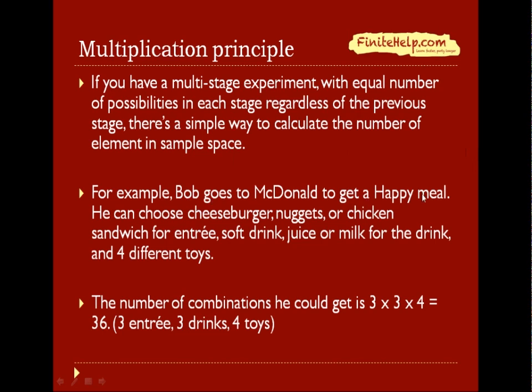For example, let's say Bob goes to McDonald's to get a happy meal. He can choose cheeseburger, nugget, or chicken sandwich for the entree, soft drink, juice, or milk for the drink, and four different toys to choose from. To figure out how many number of happy meals he can possibly get in the sample space, you would simply multiply the possible outcomes from each stage. There are three entrees, three drinks, and four toys, so the number of combinations he could get is simply three times three times four for a total of 36.